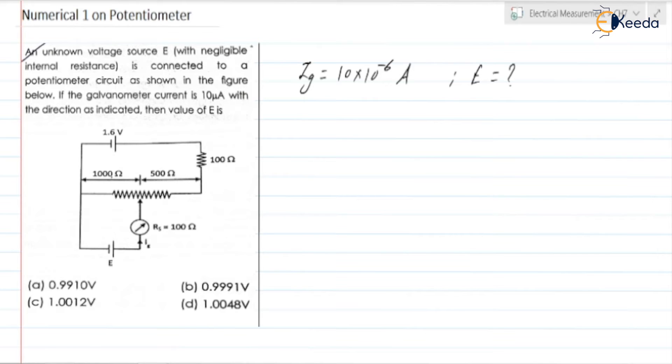Now, here galvanometer current is non-zero, means it is not yet balanced. Galvanometer resistance is also given.